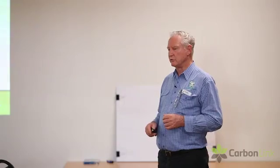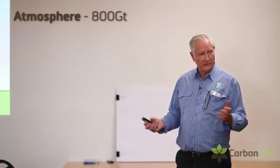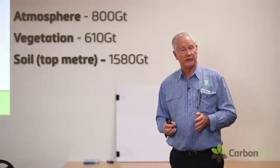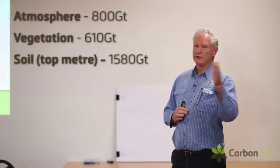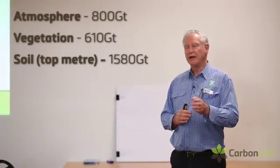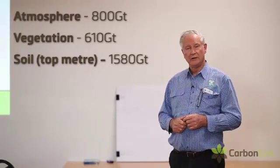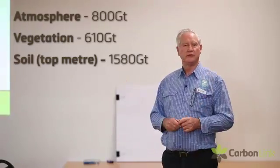Looking at the big picture of carbon in particular: in the atmosphere there's about 800 gigatonnes of carbon. On all the vegetation on Earth, there's about 610 gigatonnes. In the top metre of soils, there's an estimated 1,580 gigatonnes of carbon. I reckon if we could go back 8 to 10,000 years when agriculture began and measure that, we would have found about 3,000 gigatonnes of carbon in the soil. So agriculture has been a major contributor to CO2 going into the atmosphere.